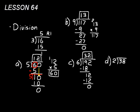Let's do 38 divided by 2. 2 goes into 3 exactly one time — 2 times 2 is 4, which is too high. So we put 2 down and subtract to get 1, then bring the 8 down to get 18. 2 goes into 18 exactly 9 times, since 2 times 9 is 18. Subtract and remainder is 0. Our answer is 19.